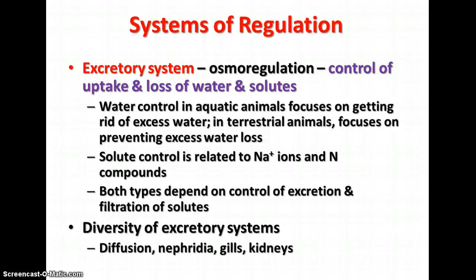The third system of regulation is the excretory system, involved with osmoregulation — the control of the uptake and loss of water and solutes. In aquatic animals, water control focuses on getting rid of excess water; in terrestrial animals, it focuses on preventing excess water loss. Solute control involves sodium ions and nitrogen compounds. Both depend on controlling excretion and filtration of solutes from the blood. There is diversity in excretory systems, from animals that rely on diffusion to those with nephridia, gills, or kidneys.